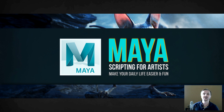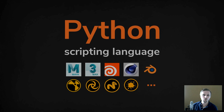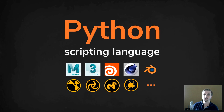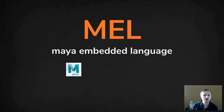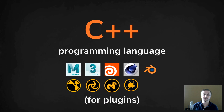Before we dive in, let's look at the languages Maya provides for scripting. One is Python, a scripting language supported by most DCC packages. The next is MEL, which stands for Maya Embedded Language, and it's only used in Maya. To be complete, there is also C++, a programming language typically used for plugins because it has much better performance than the other languages.